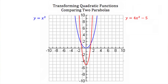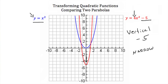Lastly, let's talk about comparing two parabolas. Here we have our parent function y equals x squared graphed in blue, and y equals 4x squared minus 5 graphed in red. They have the same axis of symmetry, but the vertex has moved down five spaces — so we have a vertical transformation of minus 5. Also notice that the red parabola is much narrower than the blue one, because we've multiplied the x squared term in the parent function by 4, narrowing our parabola by a factor of 4. That's how we've transformed y equals x squared into y equals 4x squared minus 5.